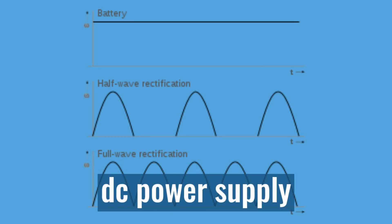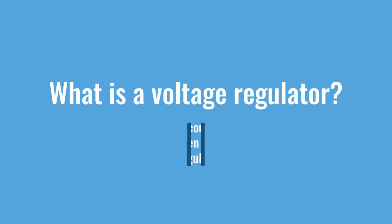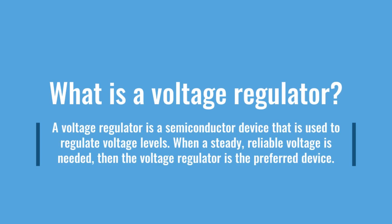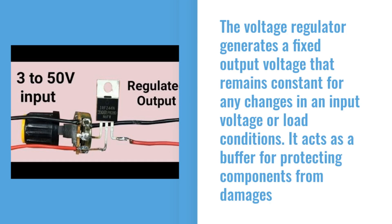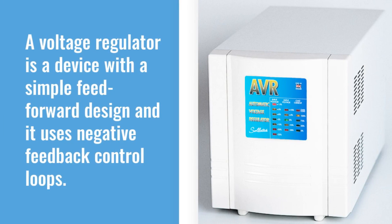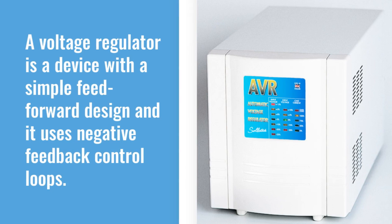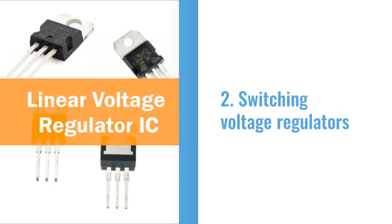What is a voltage regulator? A voltage regulator is a semiconductor device that is used to regulate voltage levels. When a steady, reliable voltage is needed, the voltage regulator is the preferred device. It generates a fixed output voltage that remains constant for any changes in input voltage or load conditions, and acts as a buffer for protecting components from damage. A voltage regulator uses a simple feed forward design with negative feedback control loops. There are mainly two types: 1. Linear voltage regulators. 2. Switching voltage regulators.